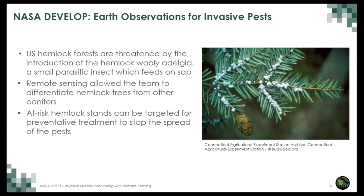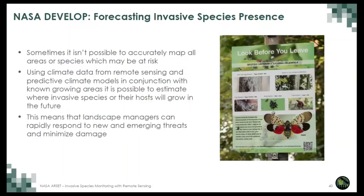Some invasive species require a more easily mappable host species as part of their life cycle. Hemlock forests in the U.S. are under threat from a small invasive insect. Using multispectral remote sensing and crowdsourced in-situ observations, this team created maps of likely compromised hemlock stands, as well as a risk assessment for currently unaffected hemlock stands. Rather than only responding to invasive species after they've already become established, it's preferable to use models of future conditions to stop invasives before they can spread.